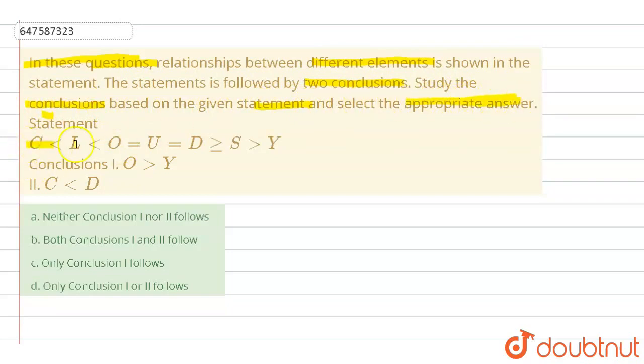The statement is C less than L less than O equals to U equals to D greater than equals to S greater than Y. And we have two conclusions. One is O greater than Y. Two is C less than D.